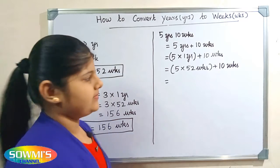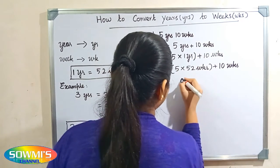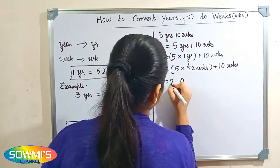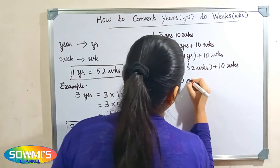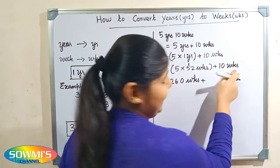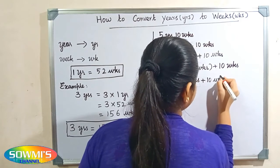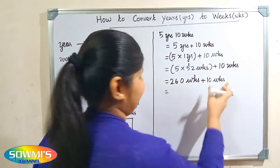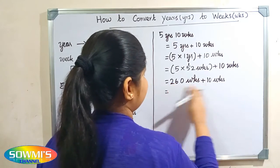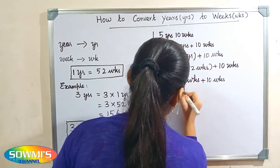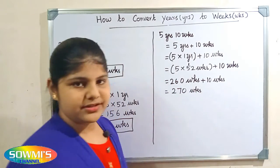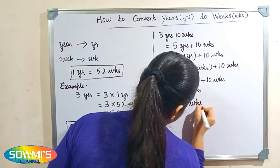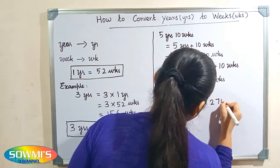Now we will solve the brackets. Two fives are ten, carry over one; five fives are twenty-five, twenty-five plus one will be twenty-six, so two hundred and sixty weeks, plus ten weeks. Now we have to add two hundred and sixty weeks and ten weeks, so two hundred and sixty plus ten weeks will be two hundred and seventy weeks. Therefore, five years ten weeks is equal to two hundred and seventy weeks.